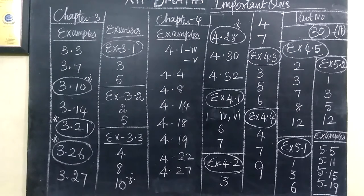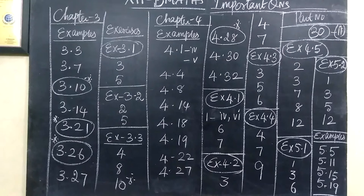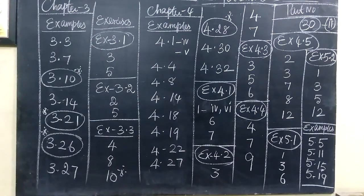Now coming to exercise 4.5, 2, 3, 7, 8, 12. Then exercise 5.1 is given 1, 3, 6.